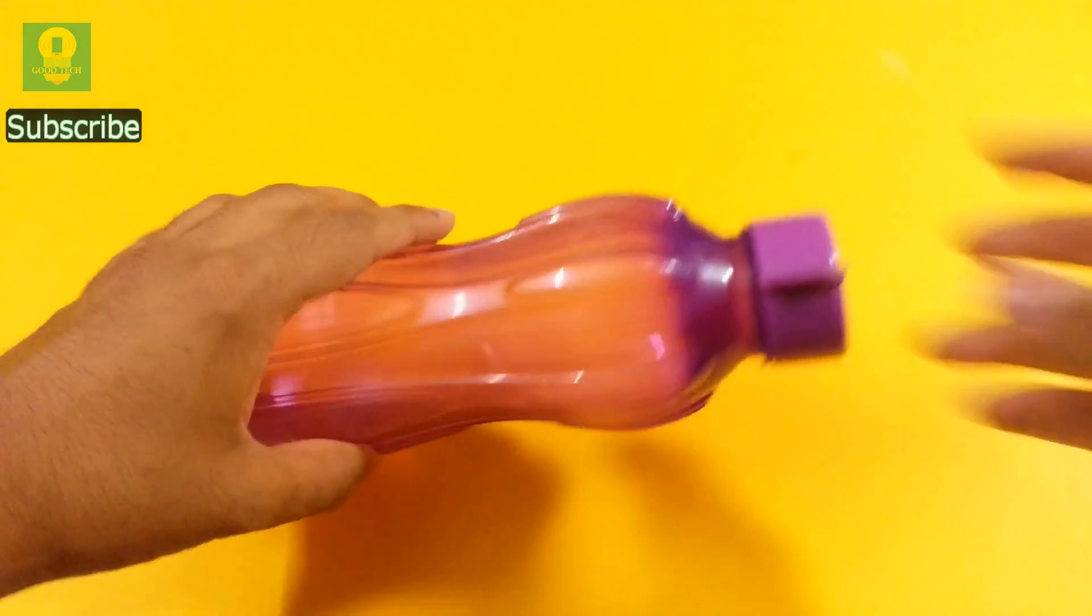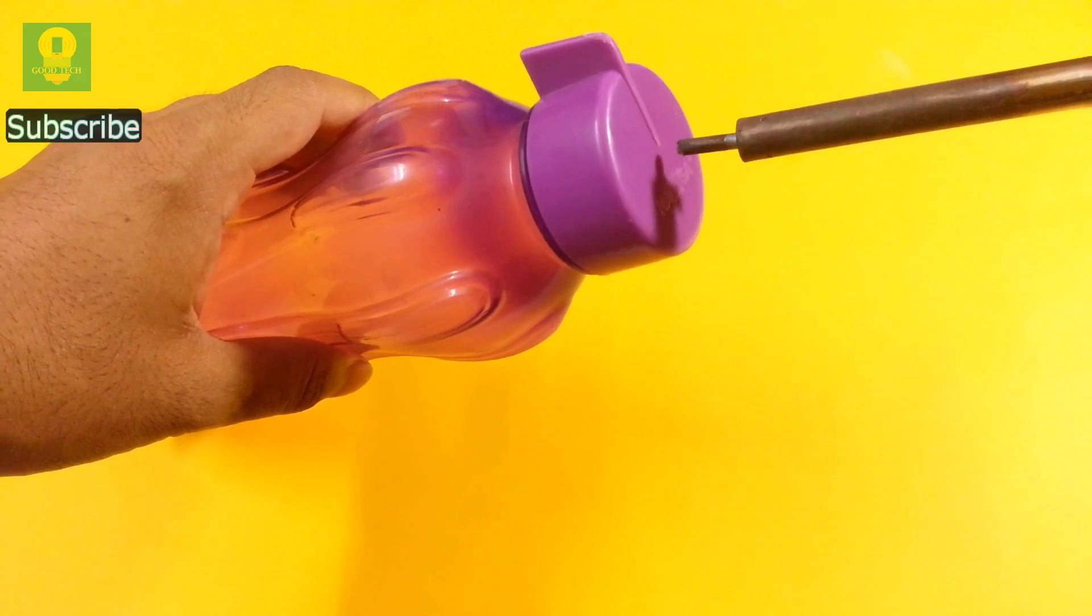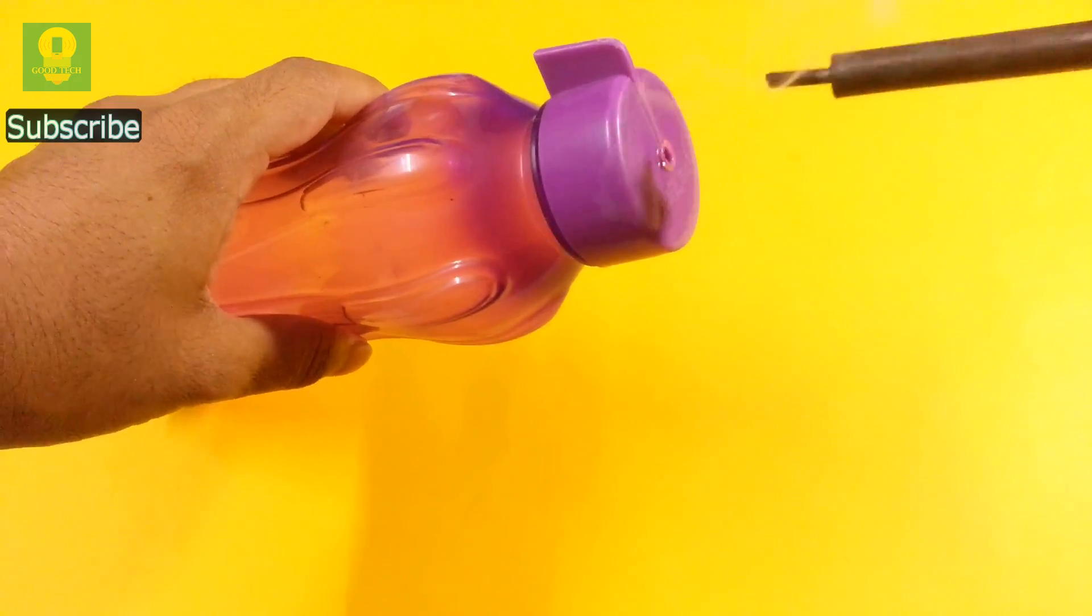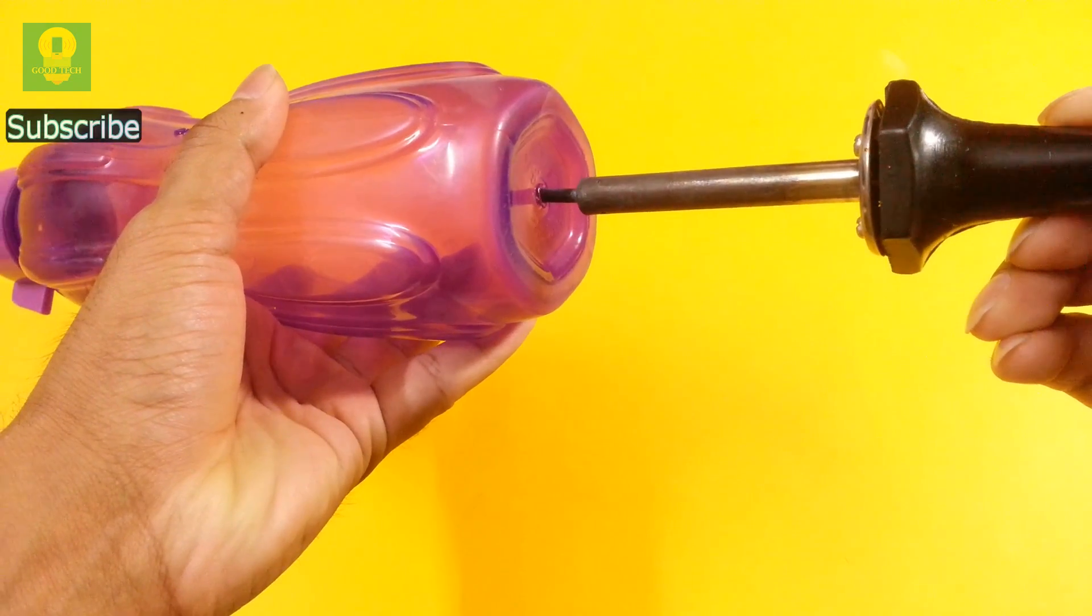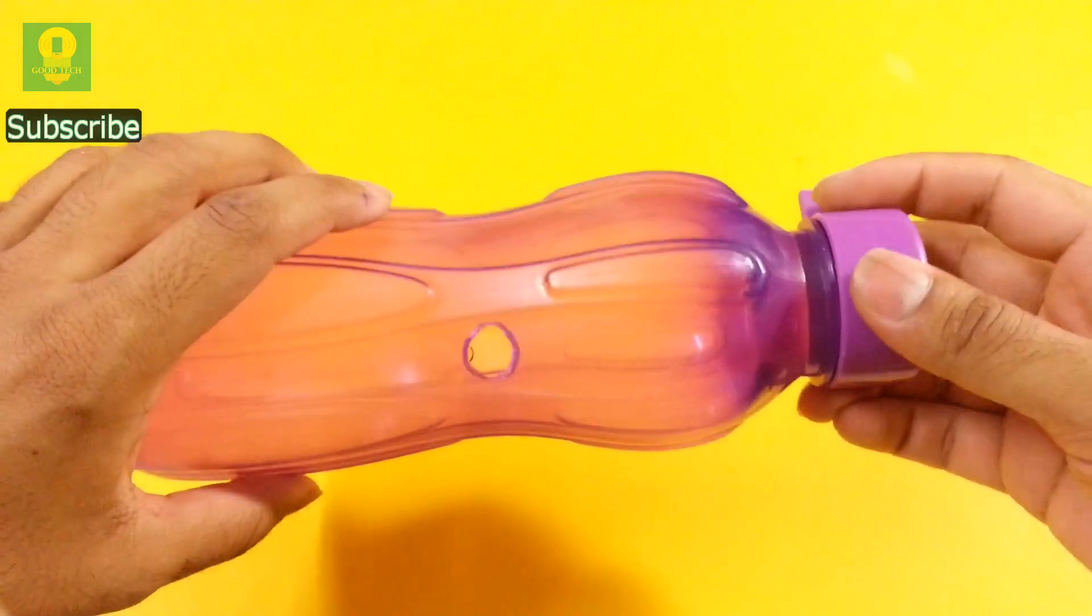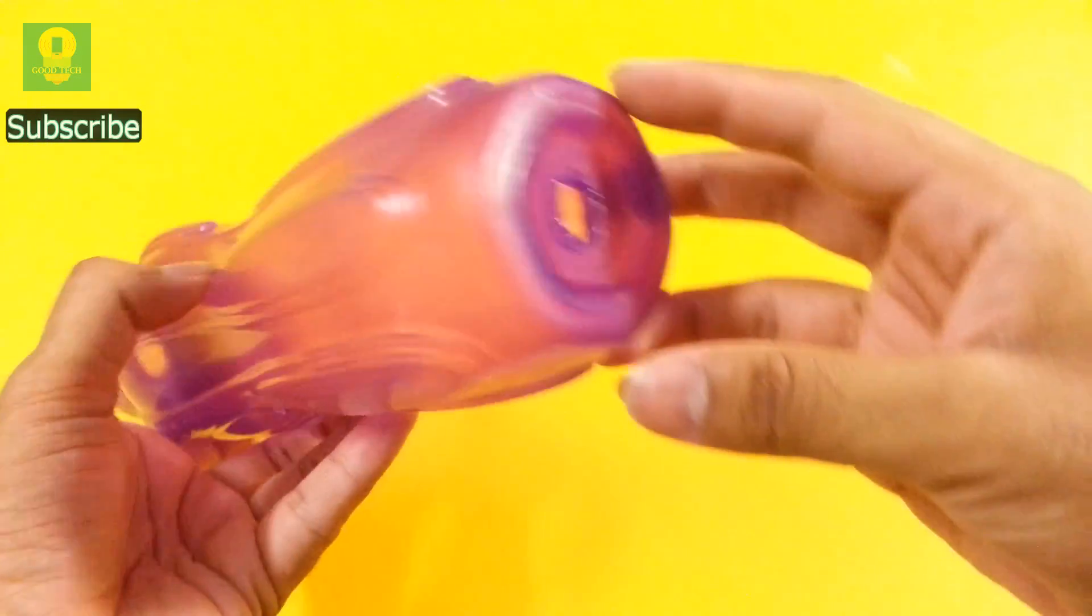To start, take the plastic bottle, make three holes in it, one at the top for the motor, one in the center for the switch and one at the bottom for the DC adapter jack. Increase the size of the holes as per the size of the components you are using.